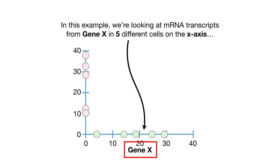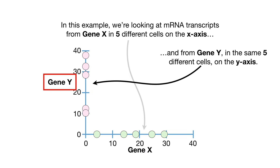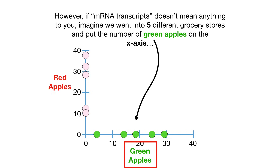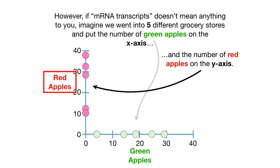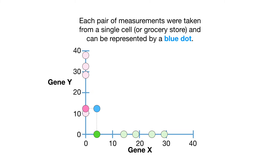In this example, we're looking at mRNA transcripts from gene X in five different cells on the x-axis and from gene Y in the same five different cells on the y-axis. If mRNA transcripts doesn't mean anything to you, imagine we went into five different grocery stores and put the number of green apples on the x-axis and the number of red apples on the y-axis. Each pair of measurements can be represented by a blue dot.